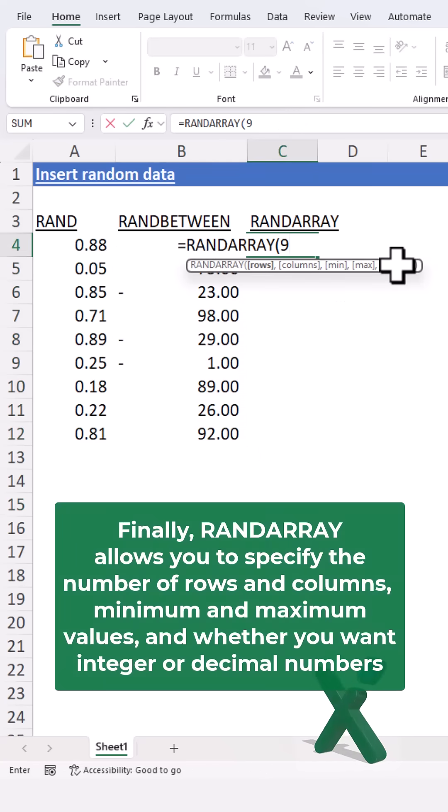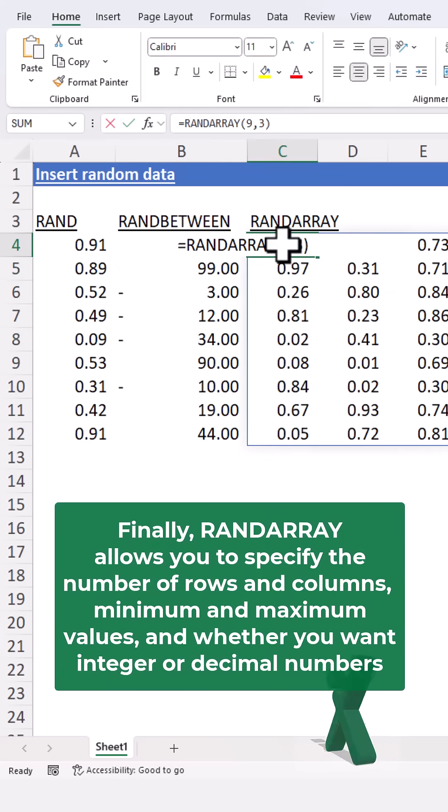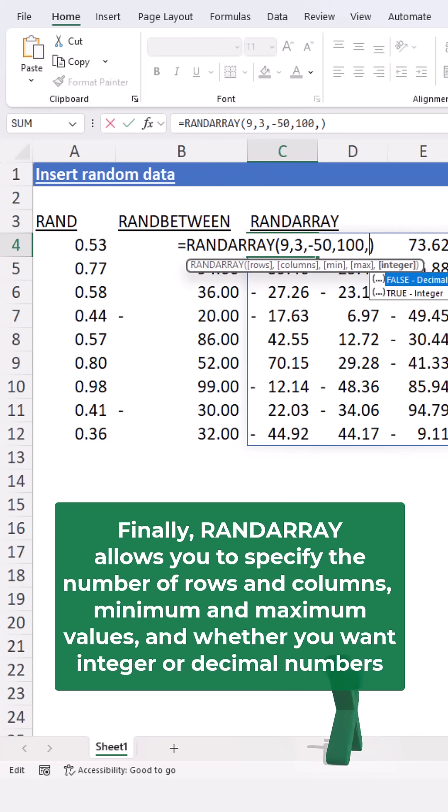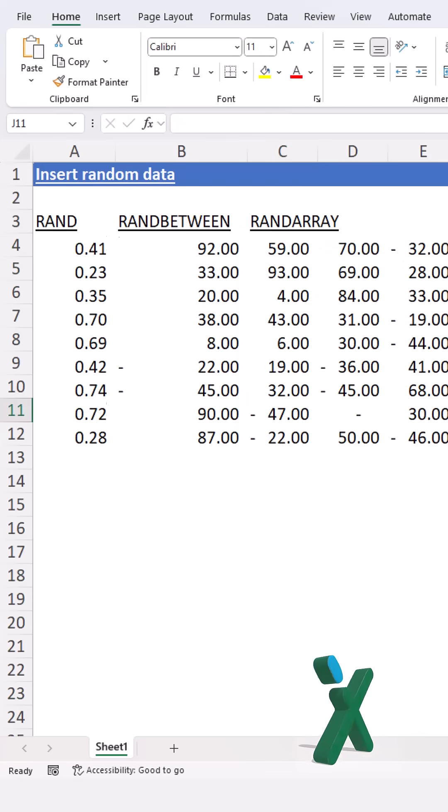Finally, RANDARRAY allows you to specify the number of rows and columns, minimum and maximum values, and whether you want integer or decimal numbers.